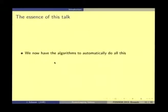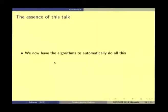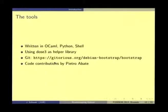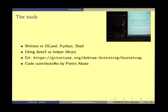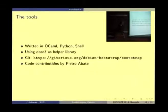The essence of this talk is that we now have algorithms to automatically unwind the whole mess of dependency graphs and produce a build order. The tools written since last summer are written in OCaml and Python, with some scripts using apt.pkg and shell. It's all lesser GPL. DOSA3 is heavily used as a helper library — the project would not be where it is without DOSA3 and the contributions by Pietro Abate.